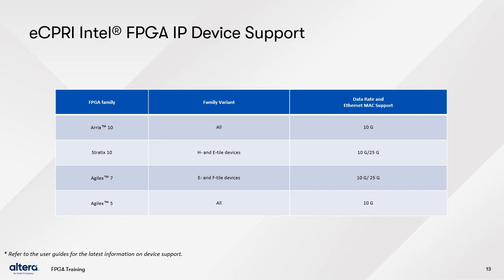For Agilex 5 FPGAs, there is initial support for 10G Ethernet, with 25G planned in a future release. For Agilex 7 FPGAs, the IP is currently supported on eTiles and fTiles, with the tile resources configured for 10G or 25G Ethernet operation. For Stratix 10 devices, the IP is supported on FBG variants with H and eTiles, again when 10G or 25G operation is chosen. For Arria 10 devices, all variants are supported with 10G operation. Always refer to the user guide for the latest device support information.